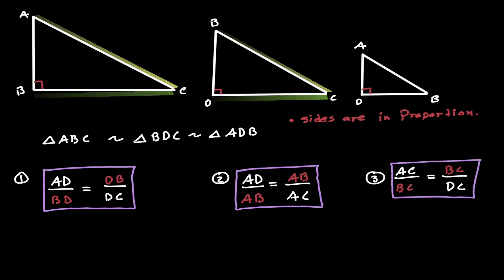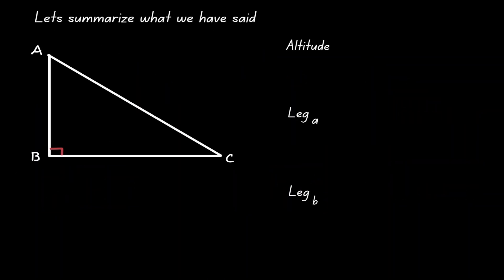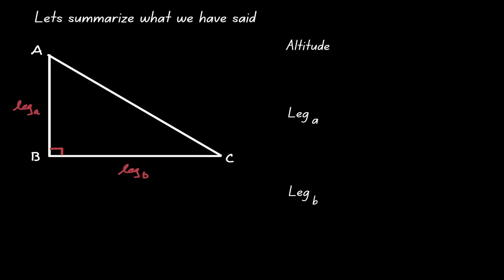These are the three proportions we consider when working with similar right triangles. Let's summarize what we have said. Let's start by labeling our right triangle: let's call AB leg A and BC leg B. Given a right triangle, if we introduce an altitude line, let's call the intersection D, and because it's an altitude we know that the intersection is 90 degrees.